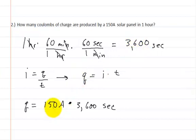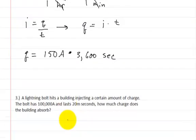So 150 times 3,600, and that's going to be equal to 540,000 coulombs. That's the answer to that one.